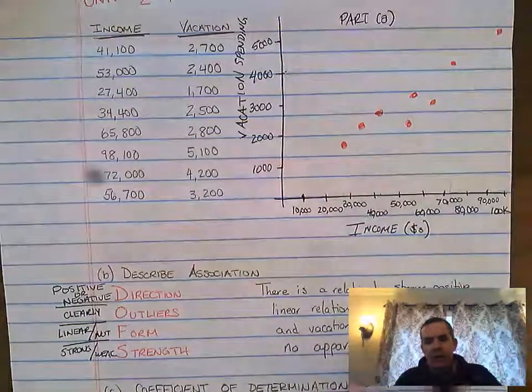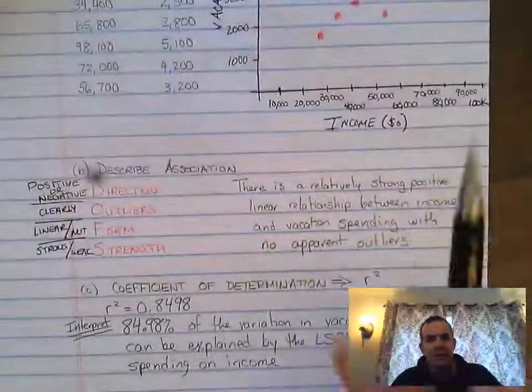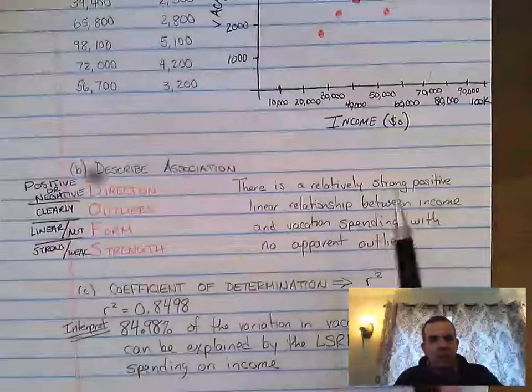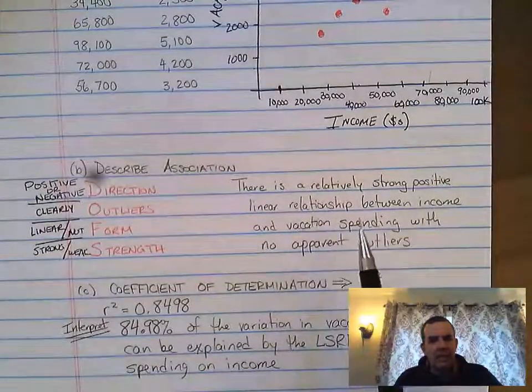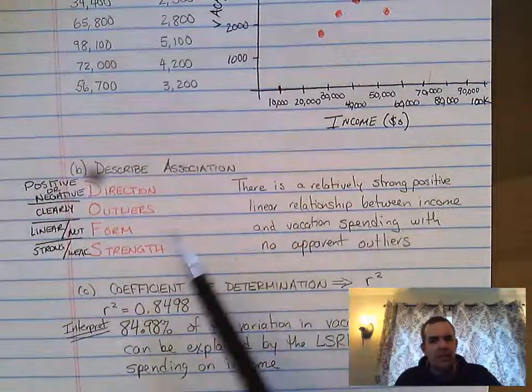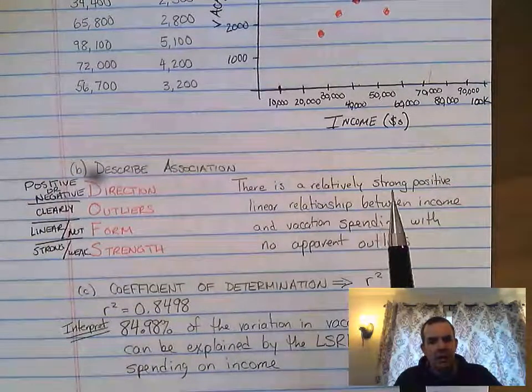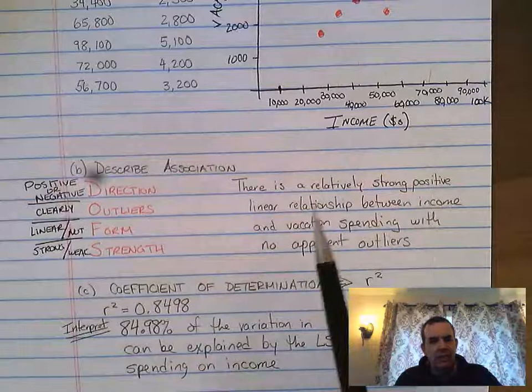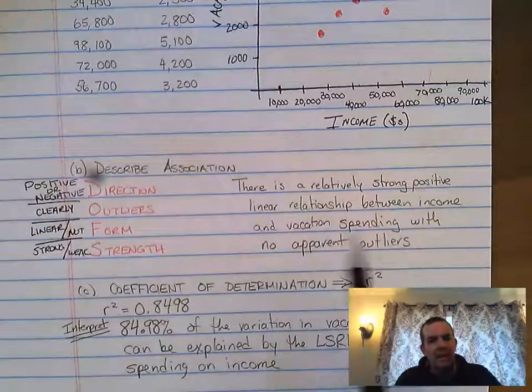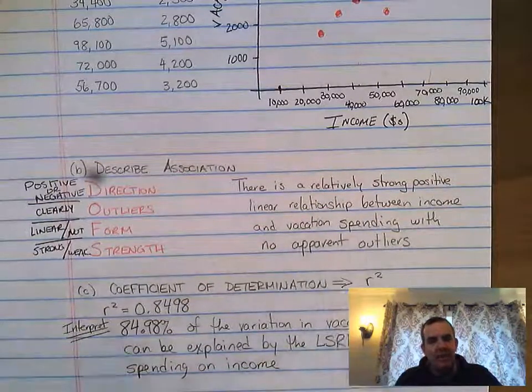So the way you'd want to read that is: there is a relatively strong positive linear relationship between income and vacation spending with no apparent outliers. So I checked off the strength, I checked off the direction, I checked off the form, I gave context, and I addressed the outliers.